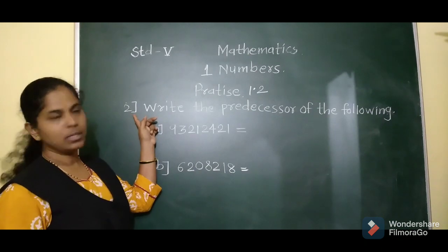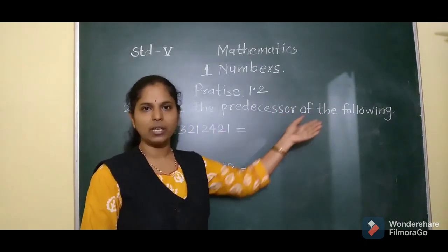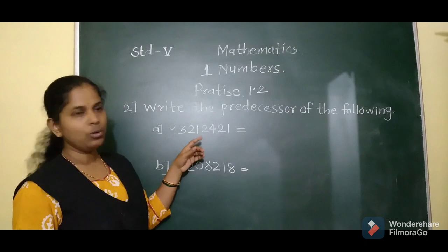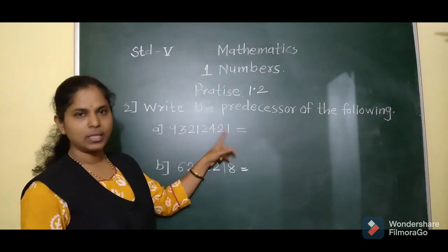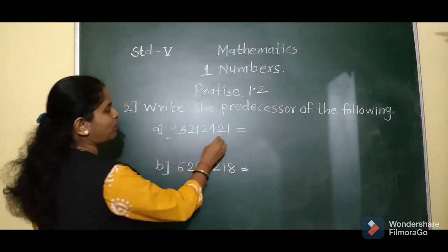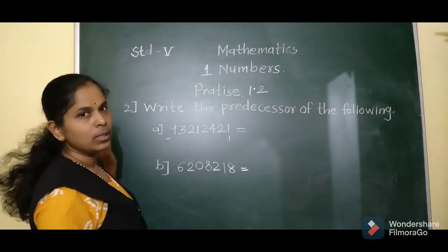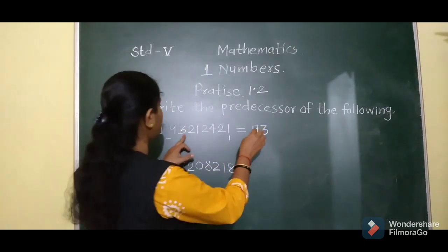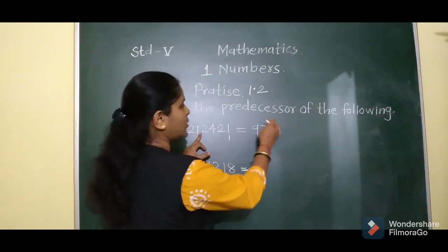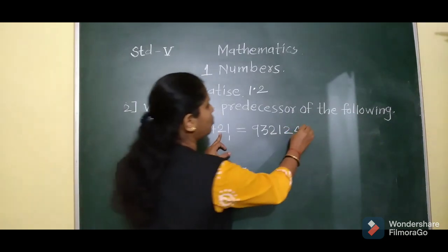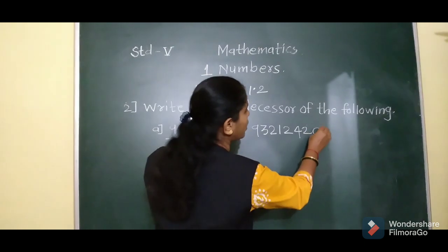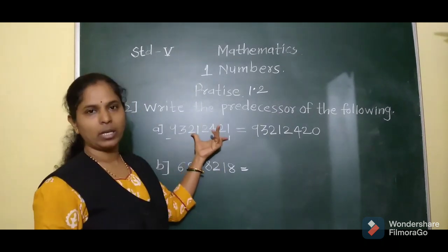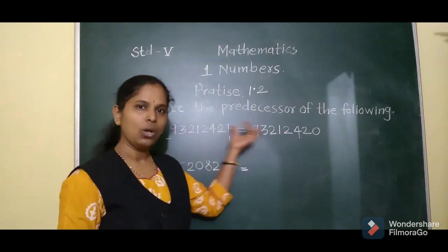Question number 2: write the predecessor of the following. Predecessor means the previous number. To find it, we subtract 1 from the 1's place and copy the rest of the digits as they are. Here, if the 1's digit is 1, then 1 minus 1 becomes 0, so we write 0 in the 1's place. I just subtracted 1 from the given number and got the predecessor.